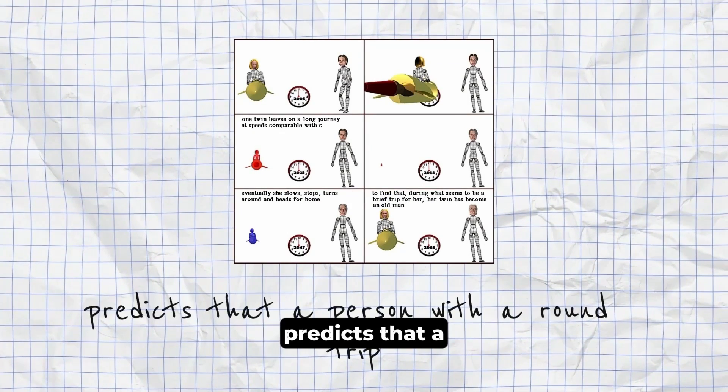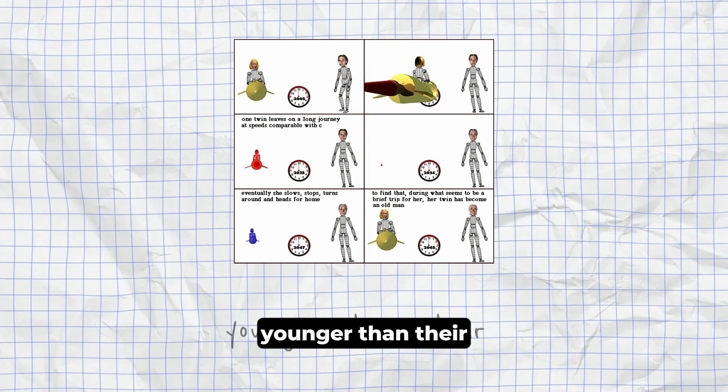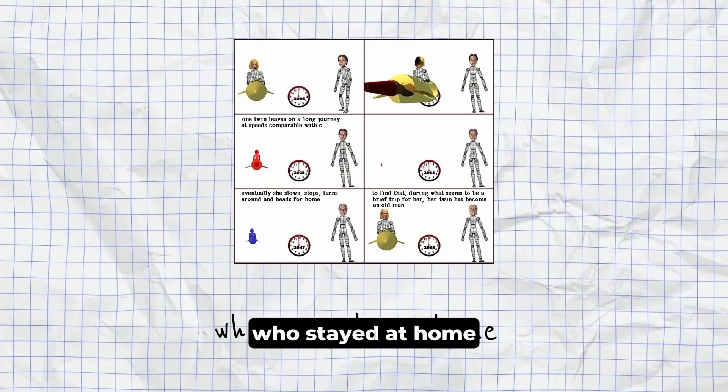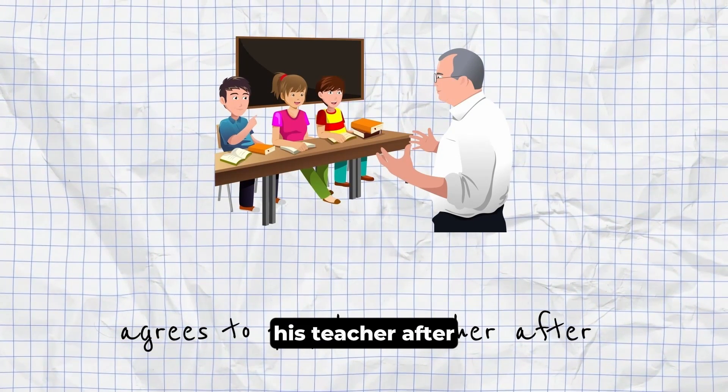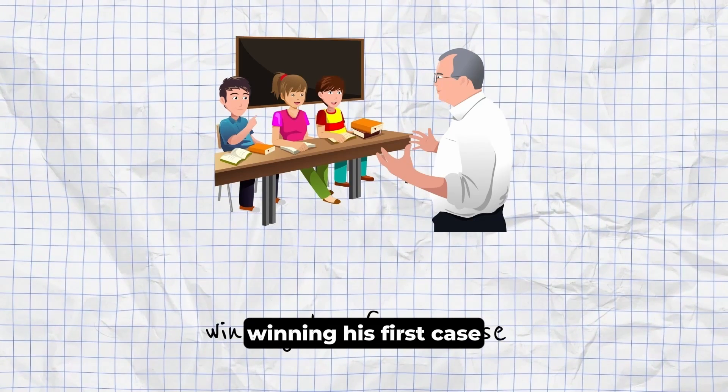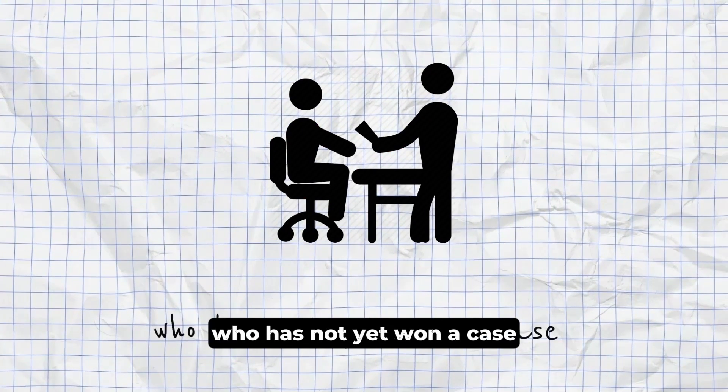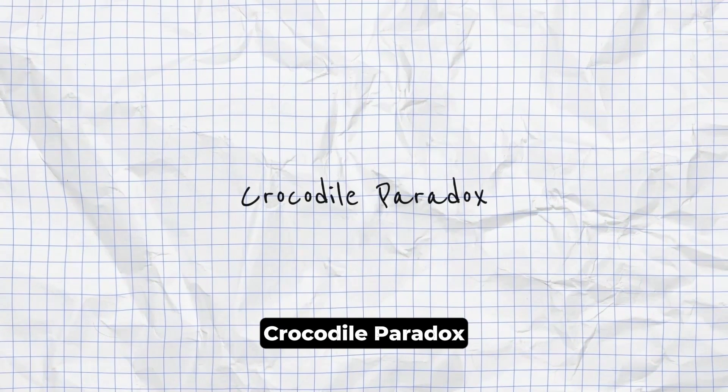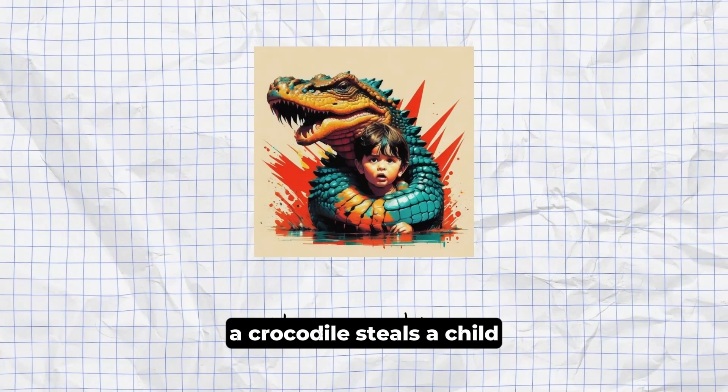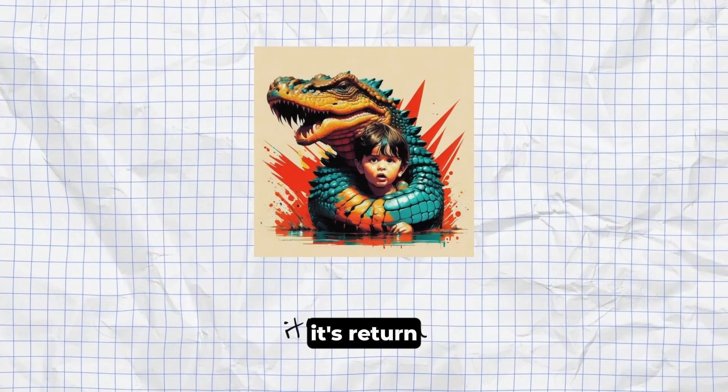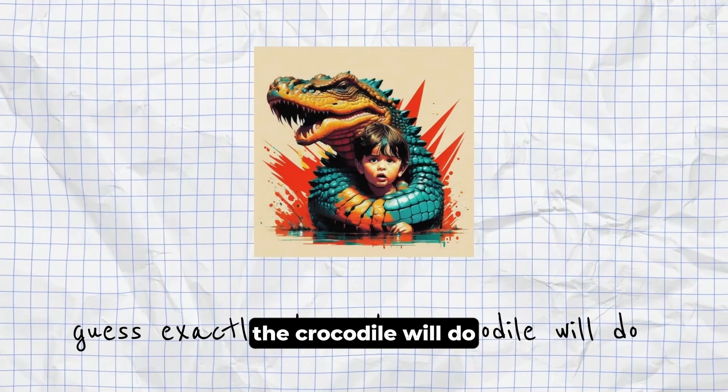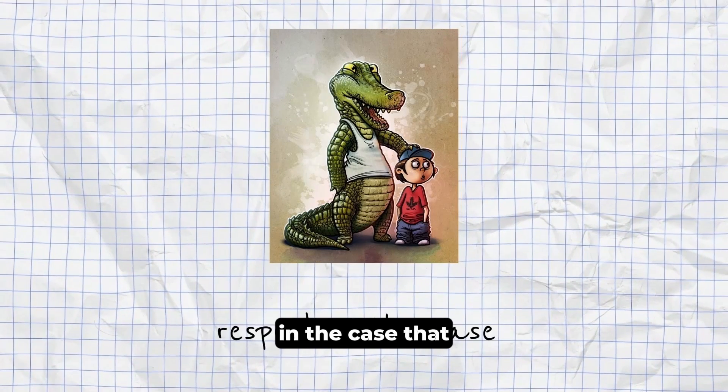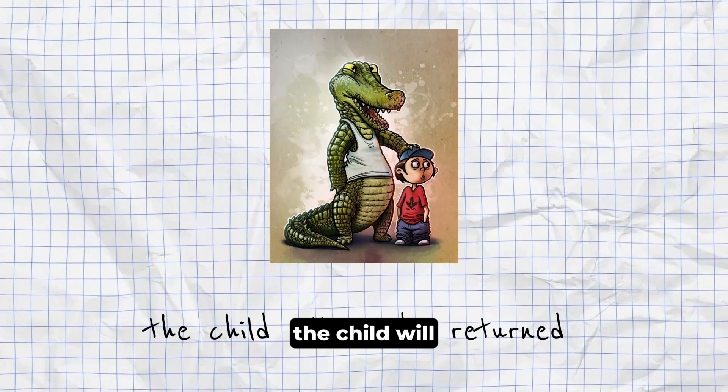Twin Paradox. A theory of relativity predicts that a person with a round trip will return younger than their identical twin who stayed at home. Corti Paradox. A law student agrees to pay his teacher after and only after winning his first case. The teacher then sues the student who has not yet won a case for payment. Crocodile Paradox. If a crocodile steals a child and promises its return if the father can correctly guess exactly what the crocodile will do, how should the crocodile respond in the case that the father guesses that the child will not be returned?